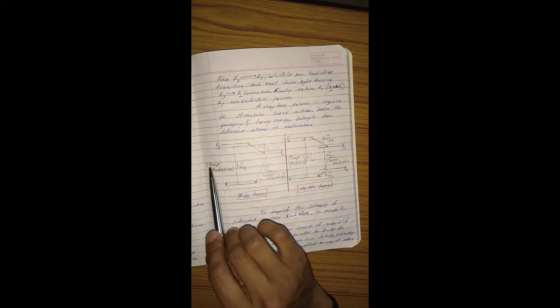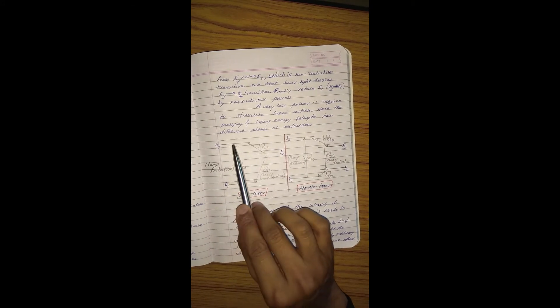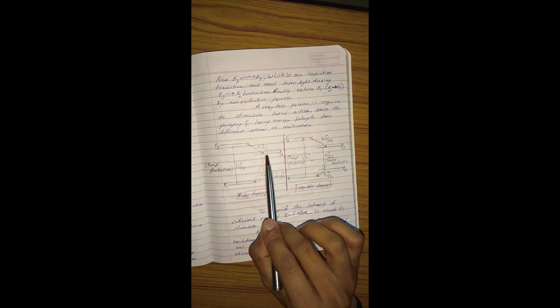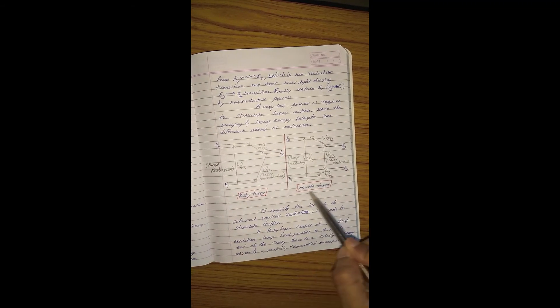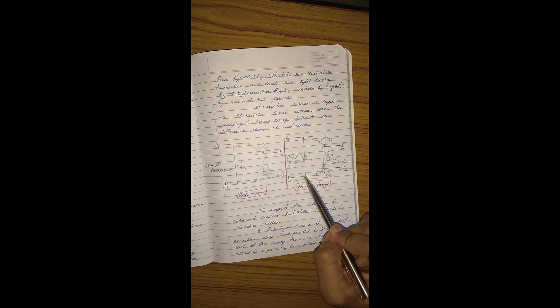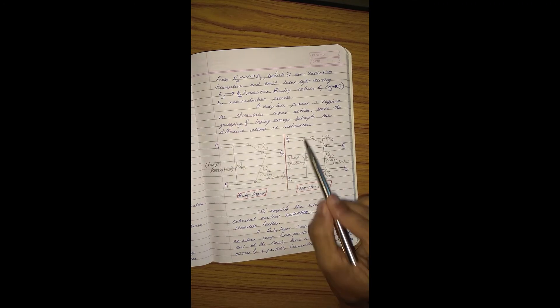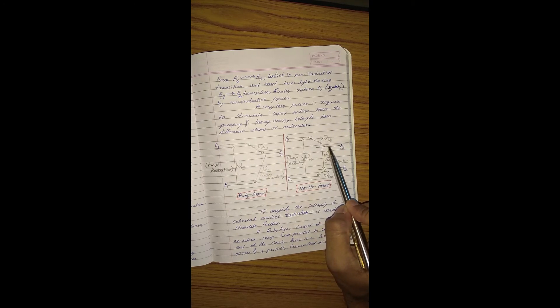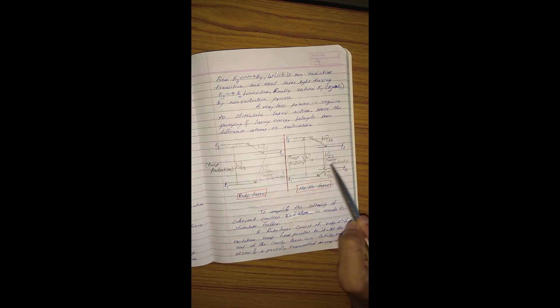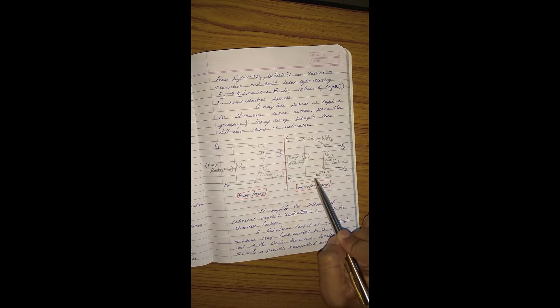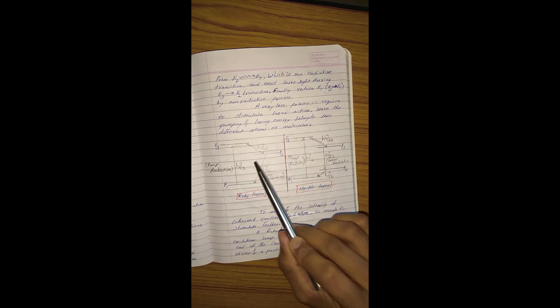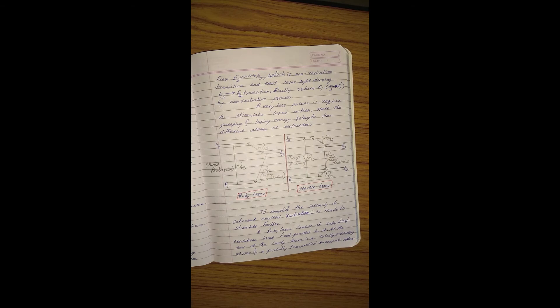In ruby laser, light is absorbed and the active species jumps to E3, E3 to E2 is non-radiative process, E2 to E1 is emission of laser light. In case of helium-neon, after absorbing radiation the molecular ion jumps from E1 to E4, E4 to E3 is non-radiative process, E3 to E2 transition emits laser light, and E2 to E1 is again non-radiative process. We prefer lasers because very less power is required to stimulate laser action, and here pumping and laser energy belong to two different atoms or molecules.